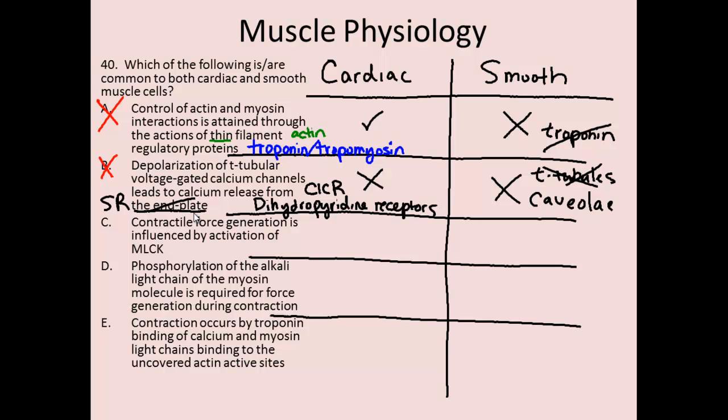Response C: contractile force generation is influenced by activation of myosin light chain kinase. Let's review how myosin light chain kinase works — calcium enters the cytosol, binds to calmodulin, and that leads to the activation of myosin light chain kinase. This is true in cardiac muscle; it does influence the force of contraction.